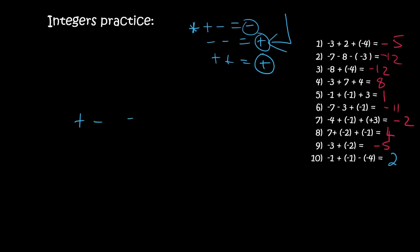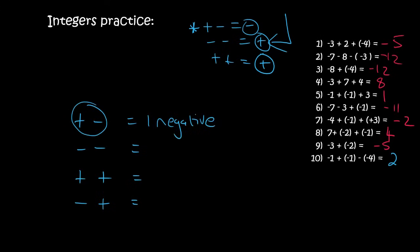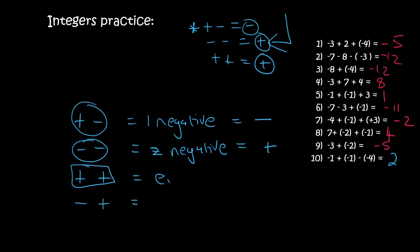Now let me explain the sign rules — a plus and a minus, a minus and a minus, a plus and a plus, and a minus and a plus. All you do is count the number of negatives. Here we have one negative — is one odd or even? That's odd, so you're going to have a minus. Here you count the negatives: there are two. Is two odd or even? That's even, so it's positive. Here there aren't any negatives, so that's just going to be even — positive. And here there's one negative — one is odd, so that's a negative.